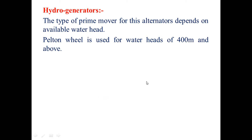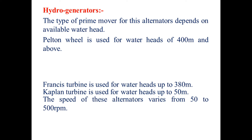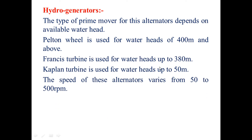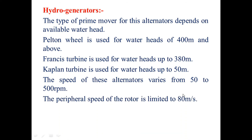For hydro generators, the type of prime mover depends on the available water head. The Pelton wheel is used for water heads of 400 meters and above; Francis turbine for water heads up to 380 meters; and Kaplan turbine for water heads up to 50 meters. The speed of these alternators varies from 50 to 500 RPM, and the peripheral speed of the rotor is limited to 80 meters per second.